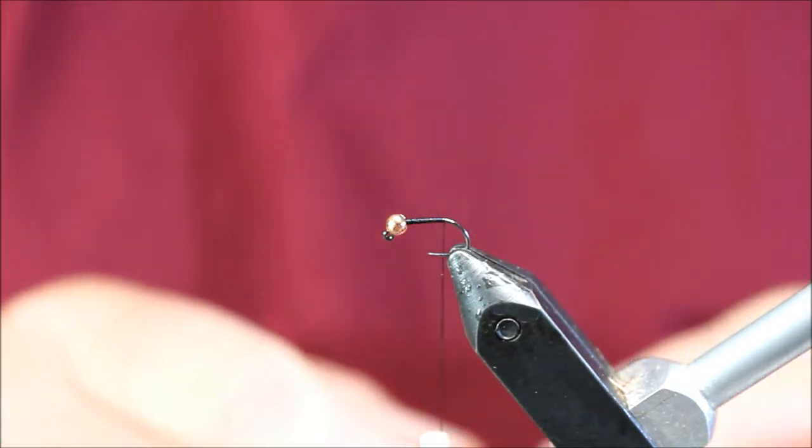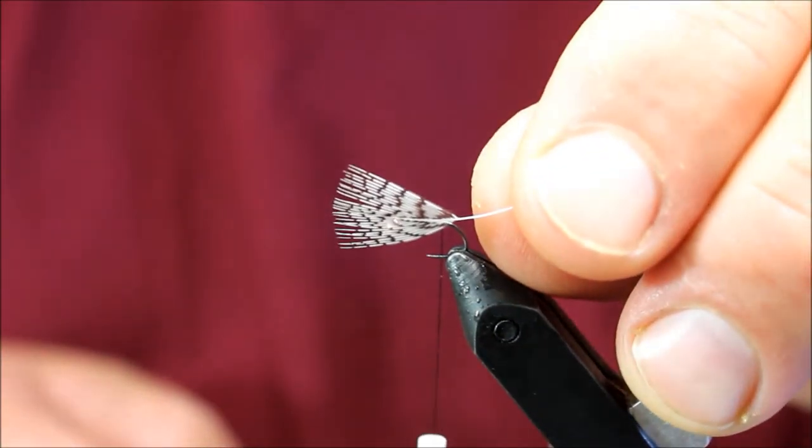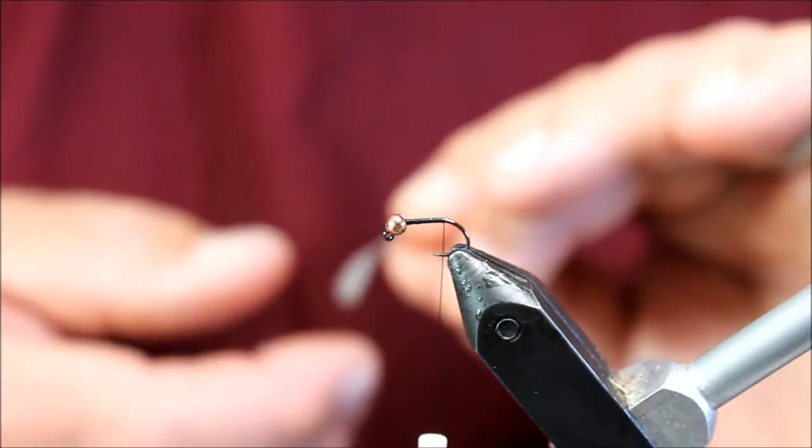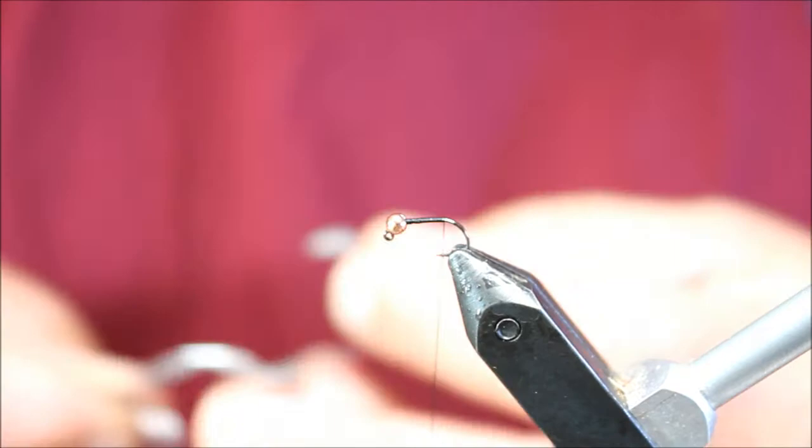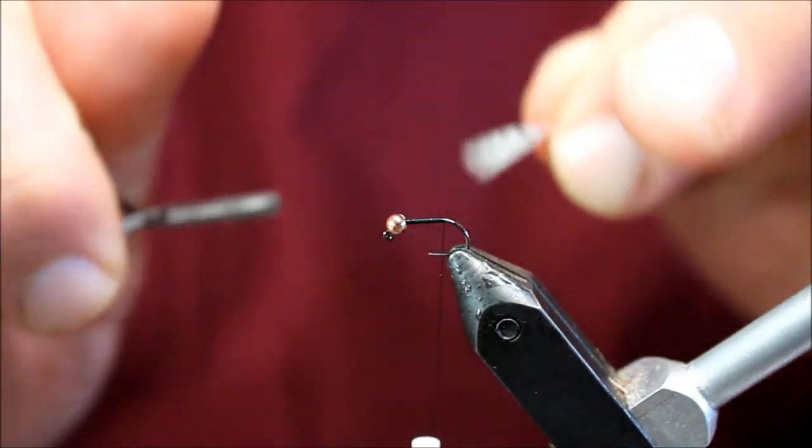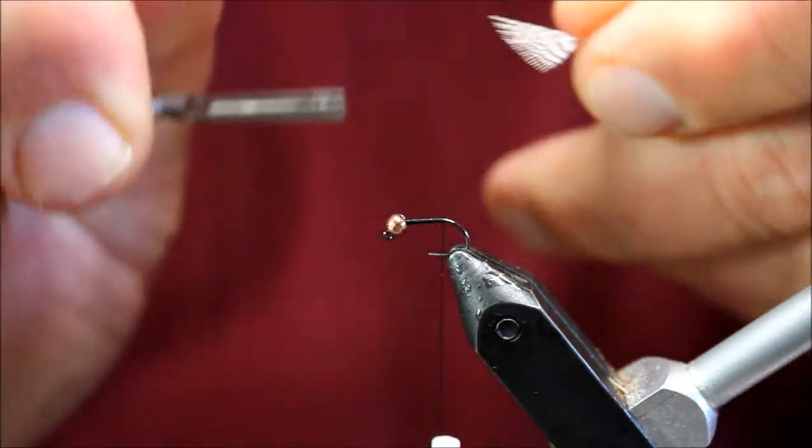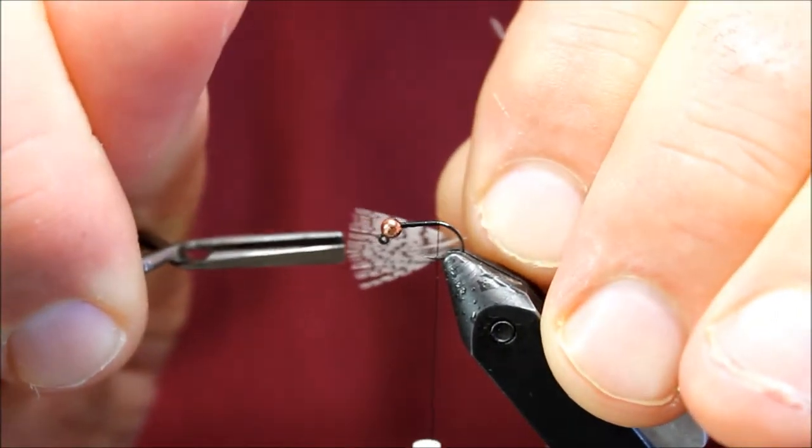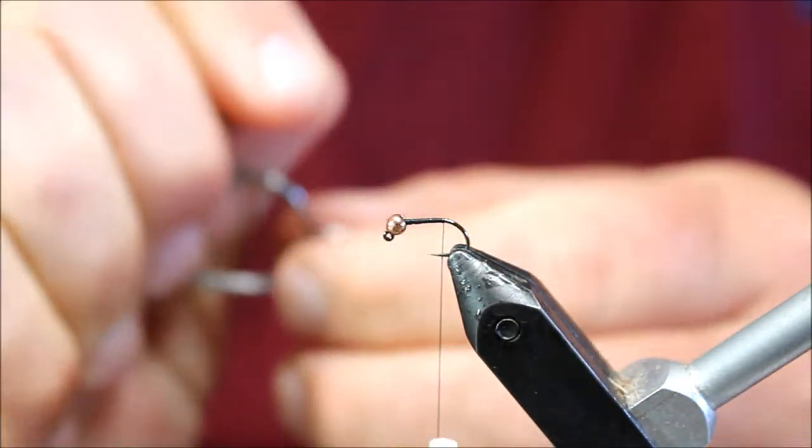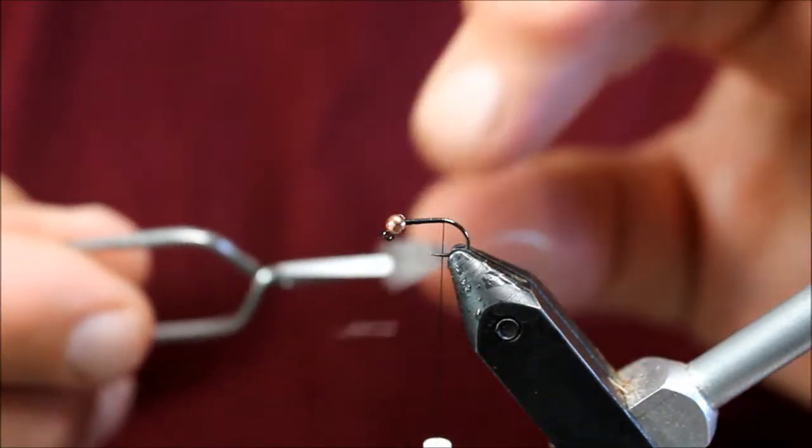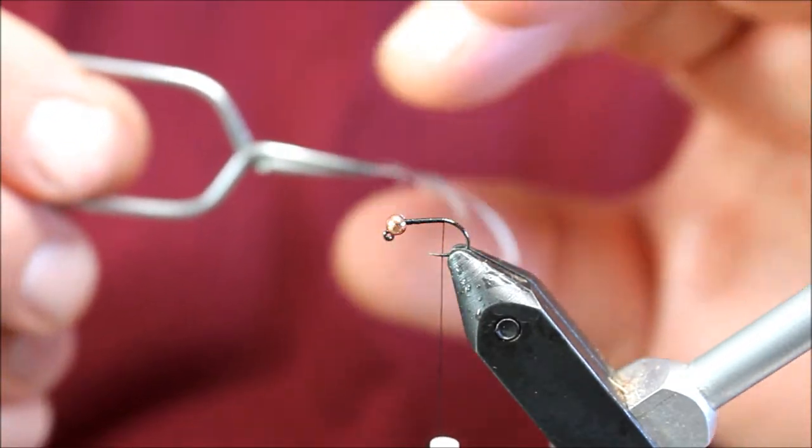Here is the size 18 jig hook with a two and a half millimeter copper bead and this is your typical Hungarian partridge feather. I take some hackle pliers and grab just the very tip right in the center of that and stroke these fibers backwards.